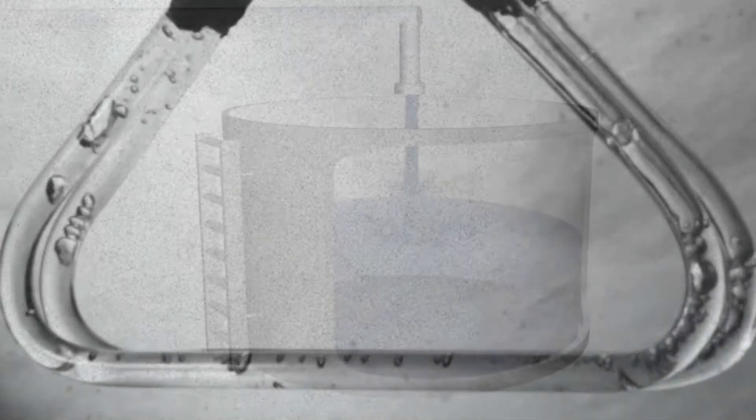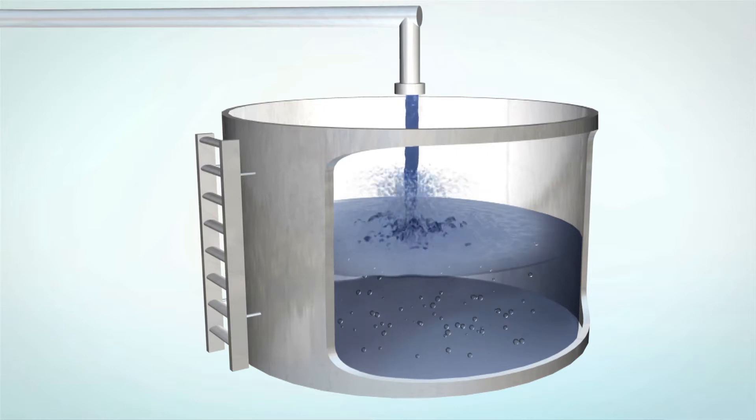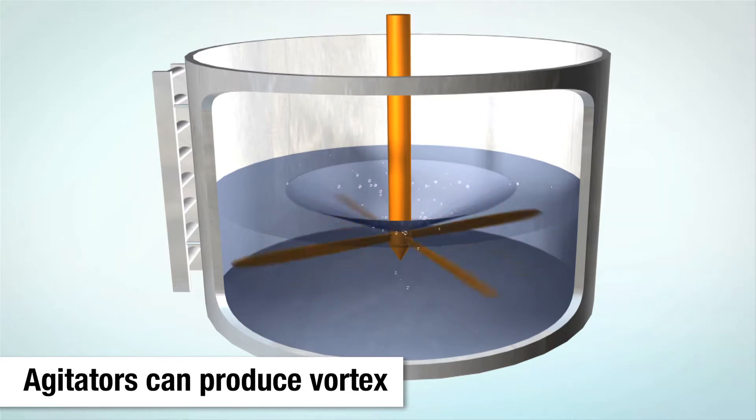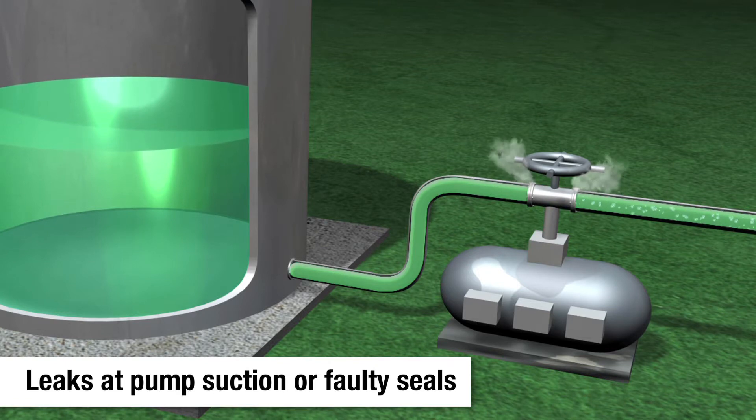Slug flow can occur as a result of long drops into tanks, where splashing occurs when the stream enters the liquid. The farther the liquid falls, the more air is entrained. Agitators can produce a vortex that entrains air into a liquid, especially when tank levels are low. Leaks on the suction side of pumps or in the pump seals themselves can also introduce air into a pipeline.